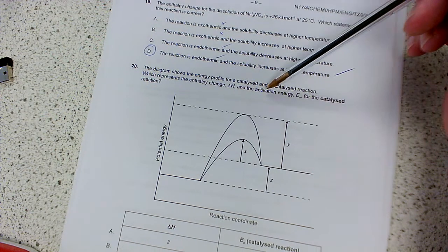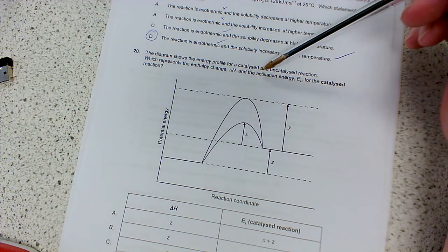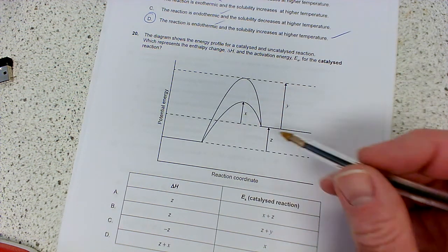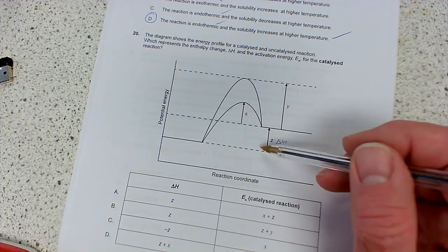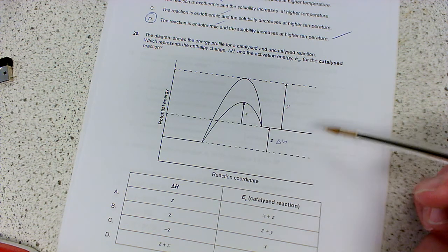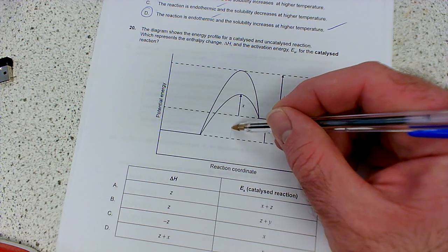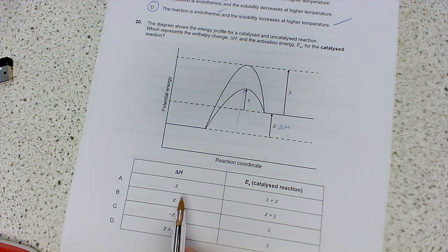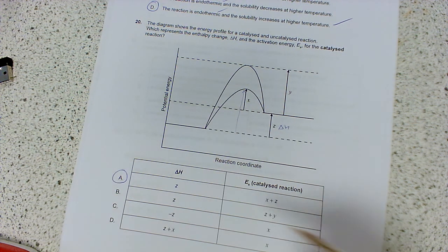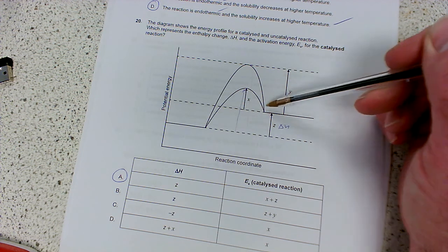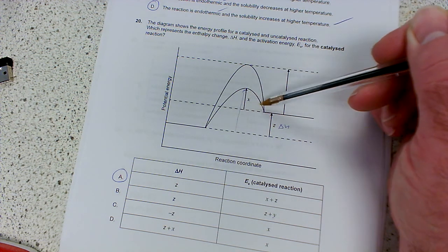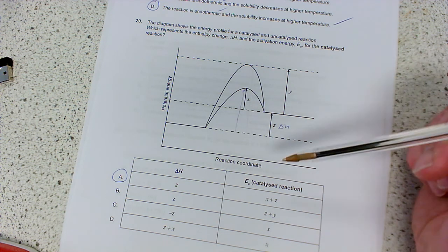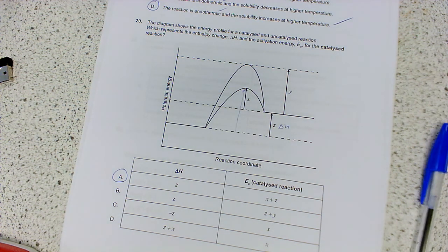Question 20: the diagram shows the energy profile for a catalyzed and uncatalyzed reaction. Which represents the enthalpy change delta H and the activation energy Ea for the catalyzed reaction? Here's our enthalpy change - this value here is delta H, the difference between the two. It's endothermic because the products are at a higher energy level. The activation energy would be from here to here for the forward reaction, so it's not just x, it's going to be x plus z. Delta H is z, activation energy is x plus z. That's the one we want there. The activation energy going forwards is always from the level of the reactants to the top of the hill. Hope that's clear, and that's the next one done.